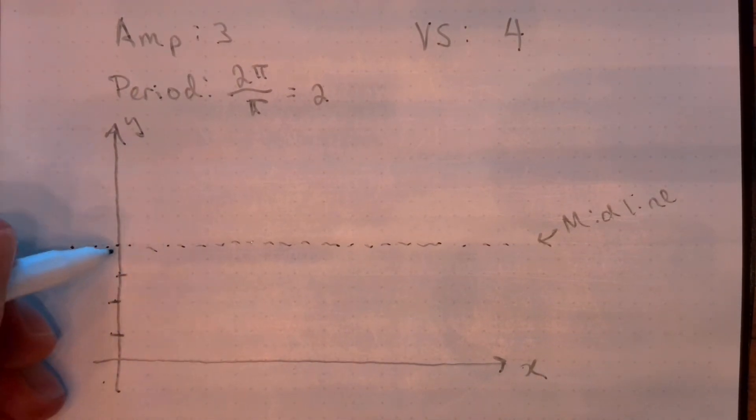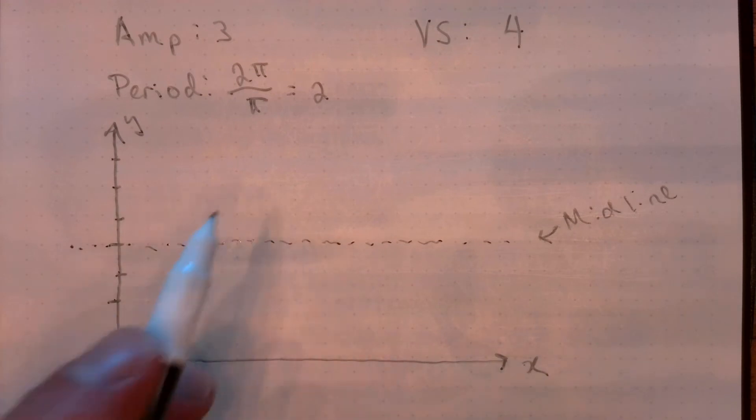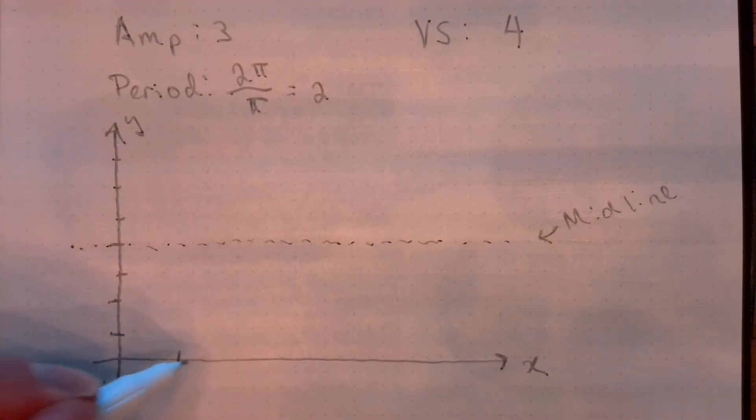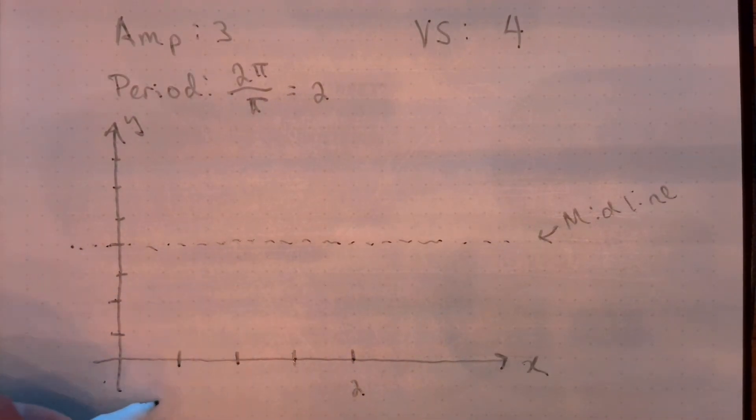1, 2, 3, 4. This is y equals 4. 5, 6, 7. Now the period of my function, we saw that, is 2. And as before, you want to divide the period of your function into 4 units, to 4 equal pieces.